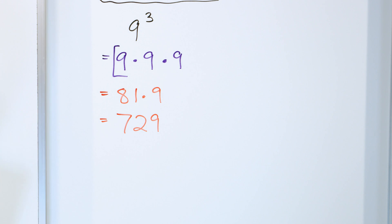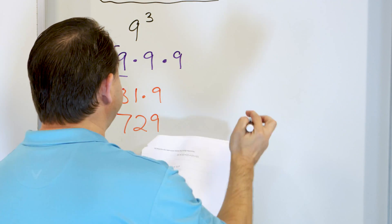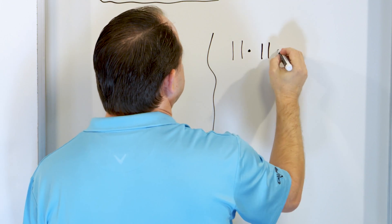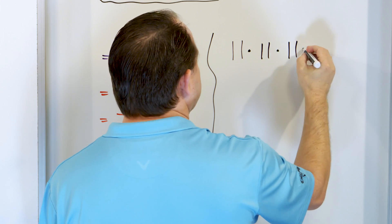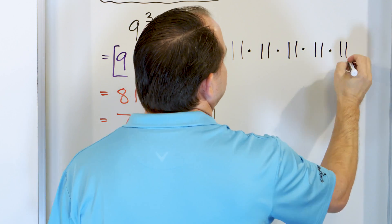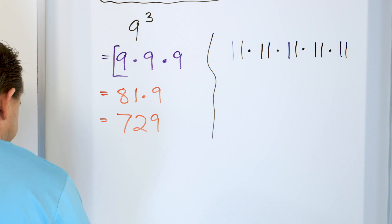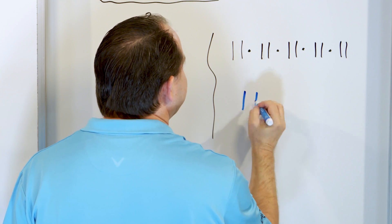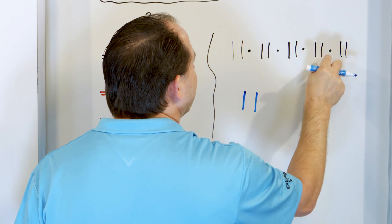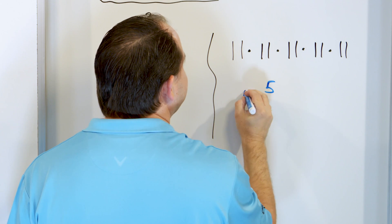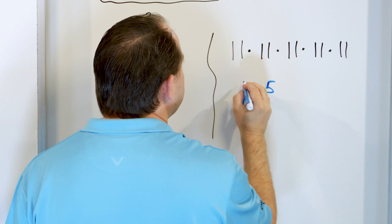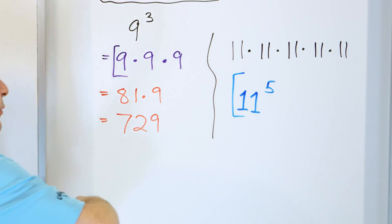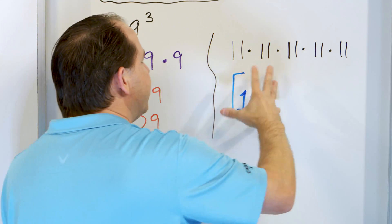What about 11 times 11 times 11 times 11 times 11 times 11 — all of those multiplied together? We're multiplying 11s, so it's going to be 11 to the power of one, two, three, four, five, six — 11 to the power of six. We're not going to calculate that one out; it'll be a really large number.